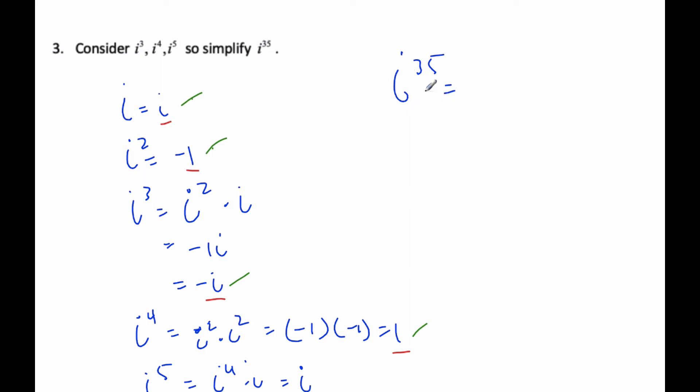So if I think about i to the 35, I know that's i to the 32 times i cubed, and I chose 32, because I know that's i to the fourth to the eighth, and i to the fourth is equal to one, and so that basically cancels out.